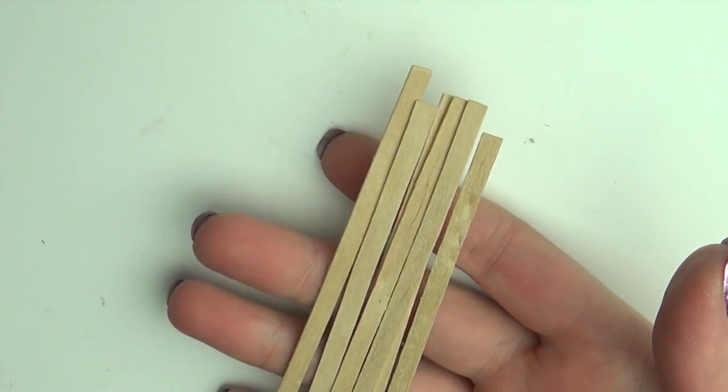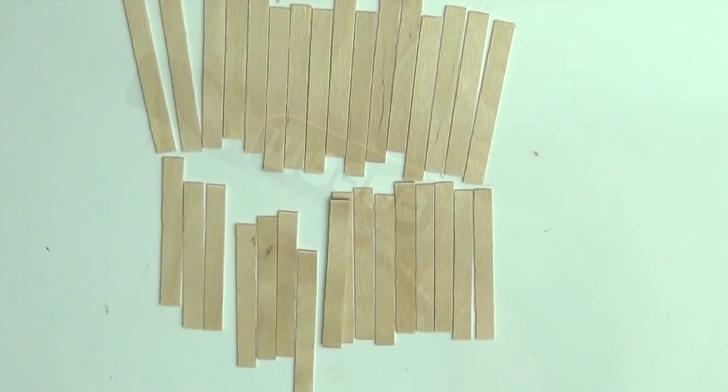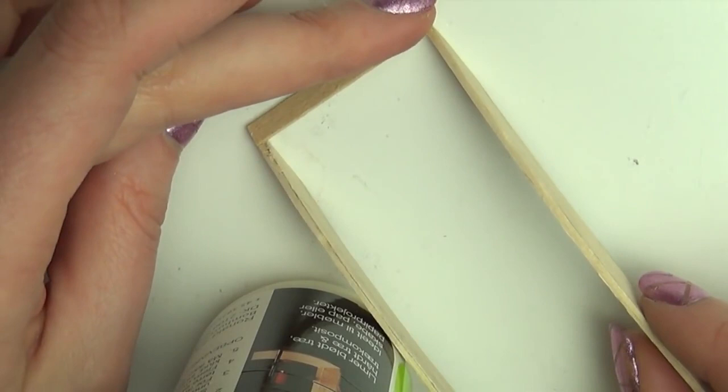To go on top, I'm using these small stirring sticks that I just cut to size with a scissor. Now glue them on top of the base. I used E6000 because I needed something that glue pretty fast.